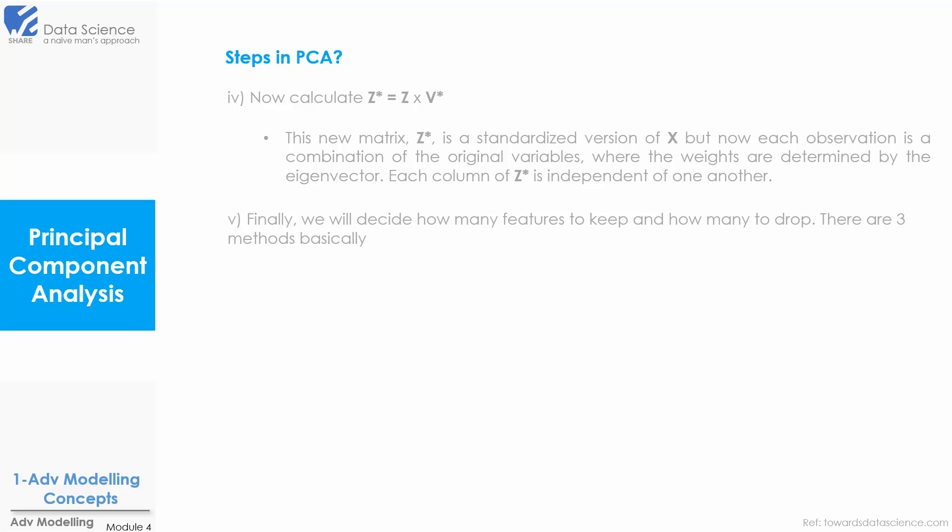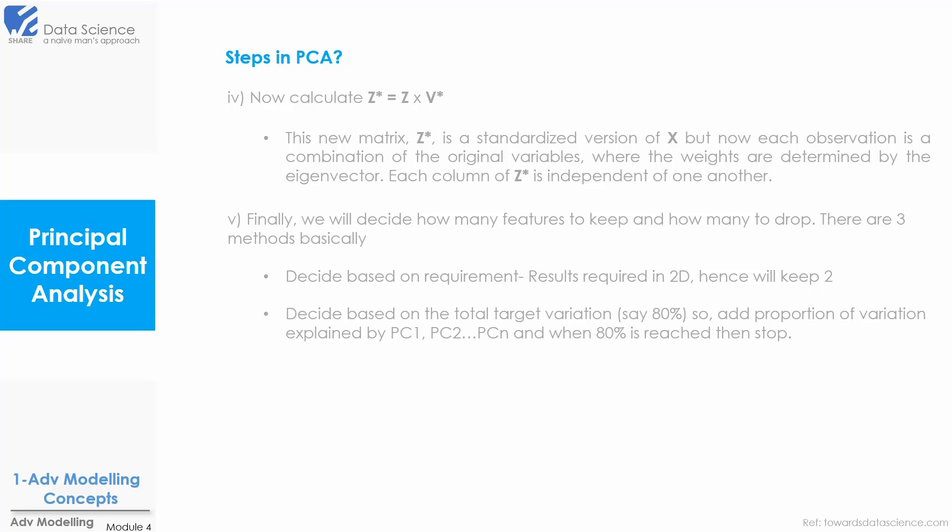Finally we will decide how many features to keep and how many to drop. There are basically three methods. We can decide based on the requirement, say we need our results in 2D hence we will only keep two PCs. Or we can decide based on the total target variation of PCs, say 80% is a target variation. Add proportion of variation explained by PC1, PC2, PC3 up to PCn and when 80% is reached then stop and select those number of principal components. Or calculate the cumulative proportion of variance explained by each feature and then plot a scree plot and select where elbow forms. This is how you can select number of principal components.